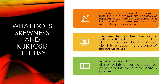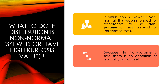In a positively skewed distribution, the data is clustered on the left-hand side. In a negatively skewed distribution, data is clustered on the right-hand side. If our distribution is skewed or has high kurtosis value, it is recommended for researchers to use non-parametric tests instead of parametric tests, because all parametric tests follow the rule of normality of data set. For non-normal data, use non-parametric tests as there is no such condition of normality.